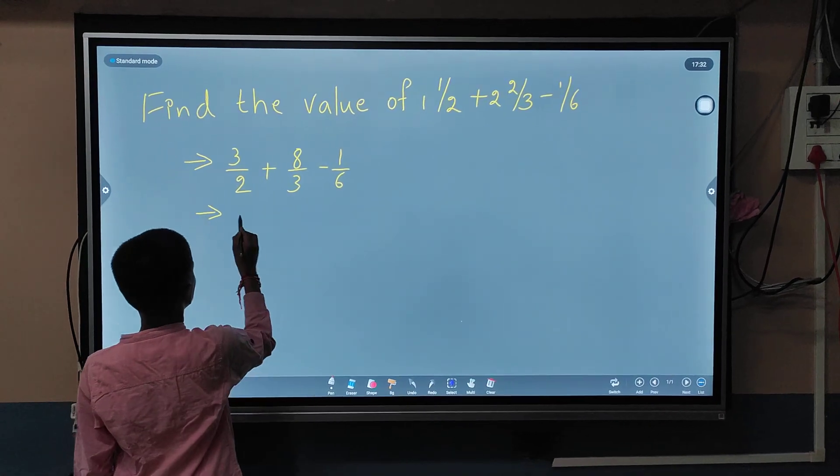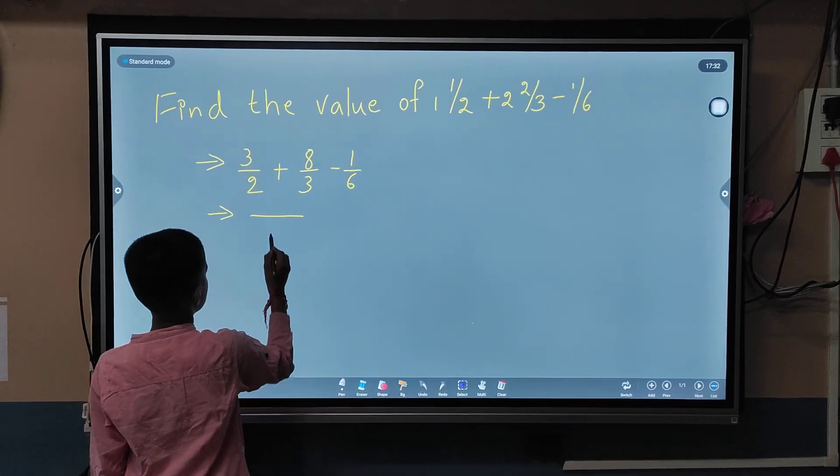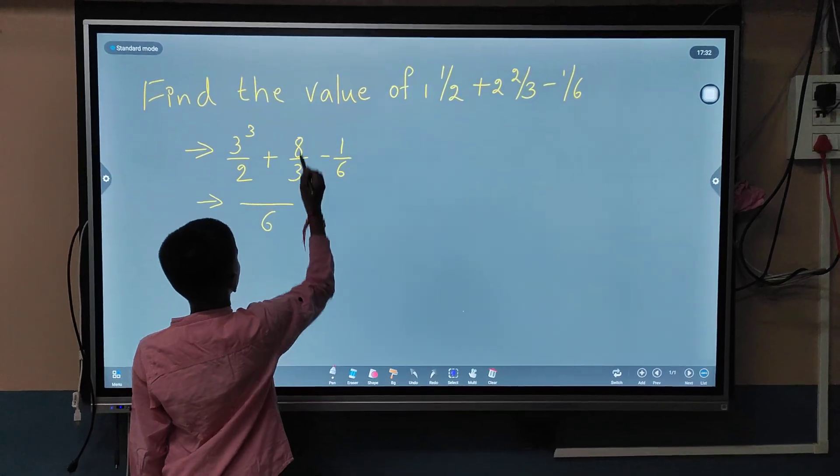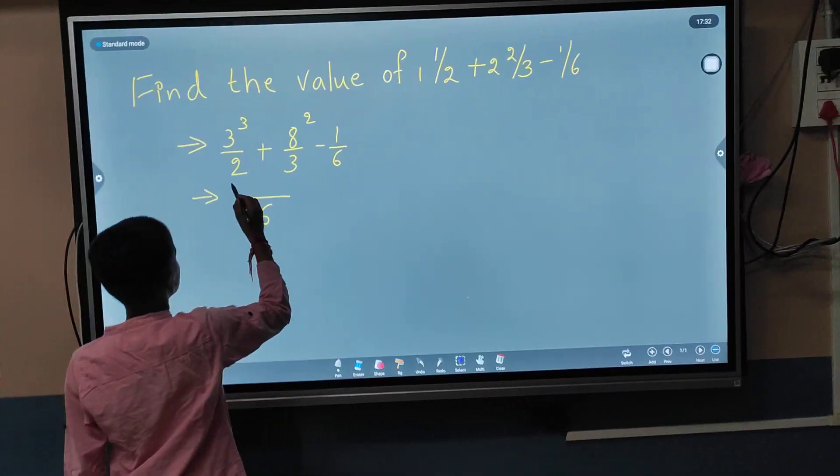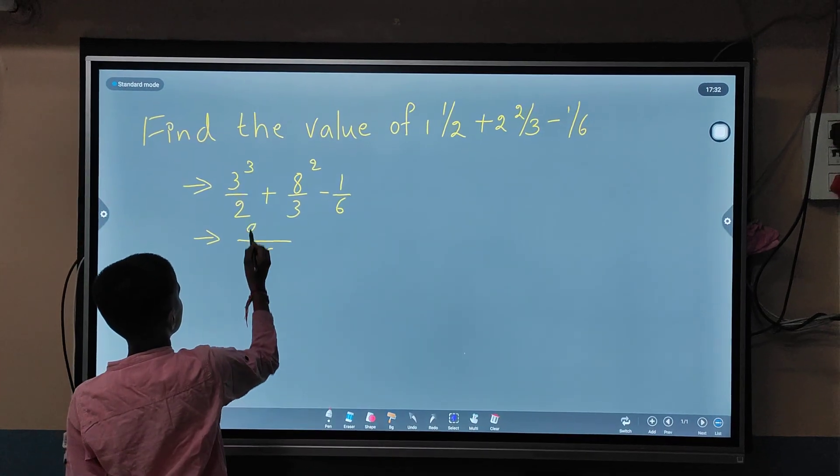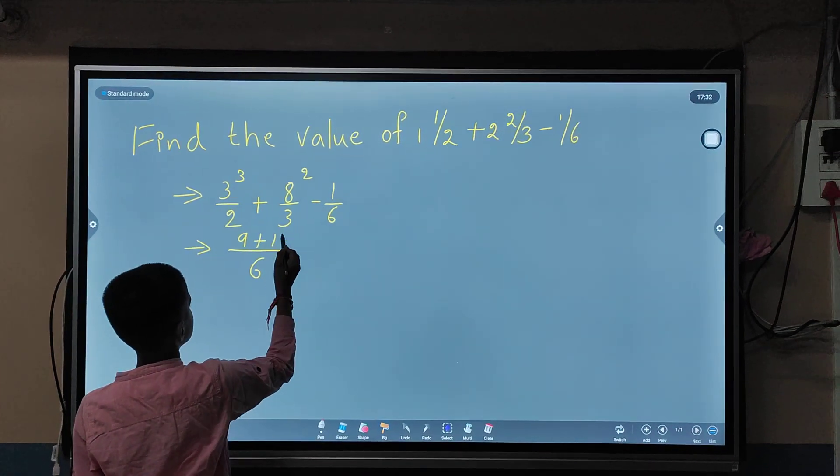We should do addition. The LCM of 2 and 3 is 6. Here we multiply to get common denominators: 3 times 3 equals 9, and 8 times 2 equals 16.